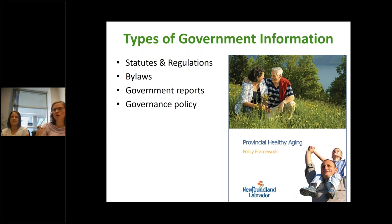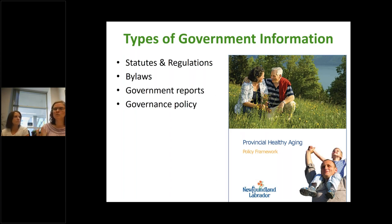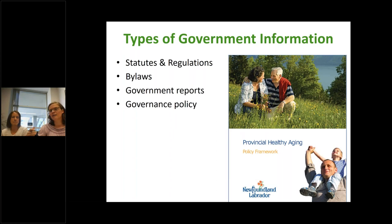I'm calling the next type governance policy — this is less a step-by-step list of things to do, but more an overarching document. For example, this one here is the Healthy Aging Policy Framework from Newfoundland. It gives background information about the folks living in Newfoundland, the demographics, and then it also has their goals — like goal number one is by such and such year have whatever in place. So it's less about how that gets done and more about what needs to be done.